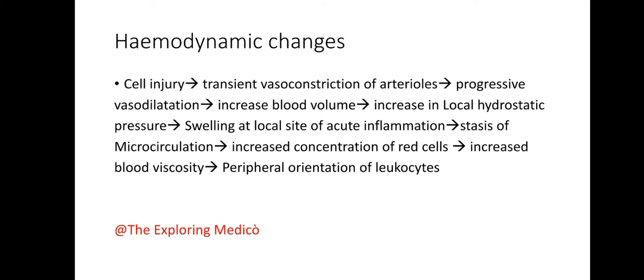Vasodilation results in increased blood volume and increased local hydrostatic pressure, which is responsible for swelling at the local site of acute inflammation. This is followed by stasis of microcirculation, increased concentration of red cells, increased blood viscosity, and peripheral orientation of leukocytes.